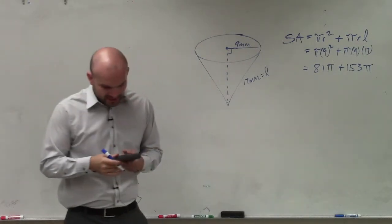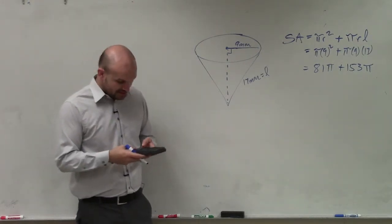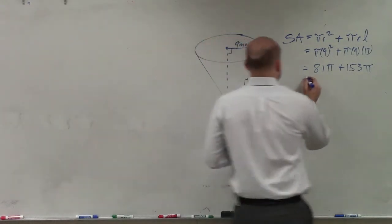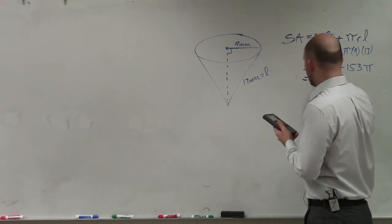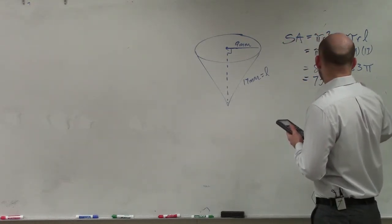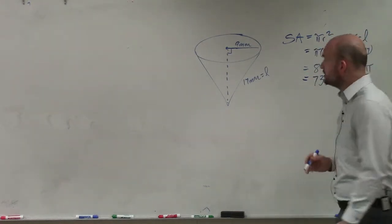So now, in my calculator, I'll do 81 times pi plus 153 times pi. And my final answer is a surface area of 735.1 millimeters. And since we're talking about area, my units are going to be squared.